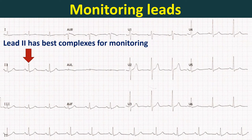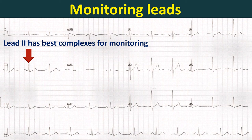Most intensive care units monitor only one lead, while some resort to two-lead monitoring for better arrhythmia analysis. All 12 leads are monitored during an electrophysiology study as well as during a treadmill exercise test.